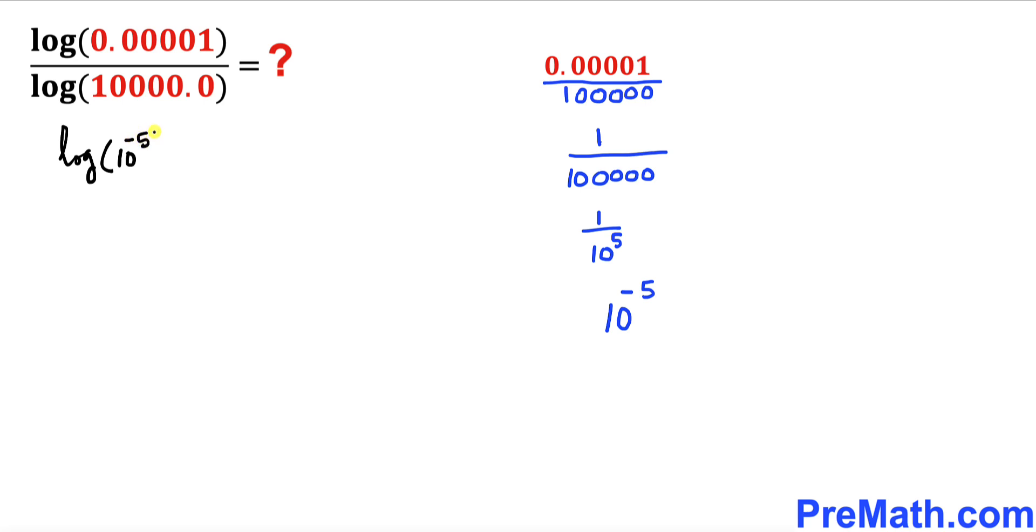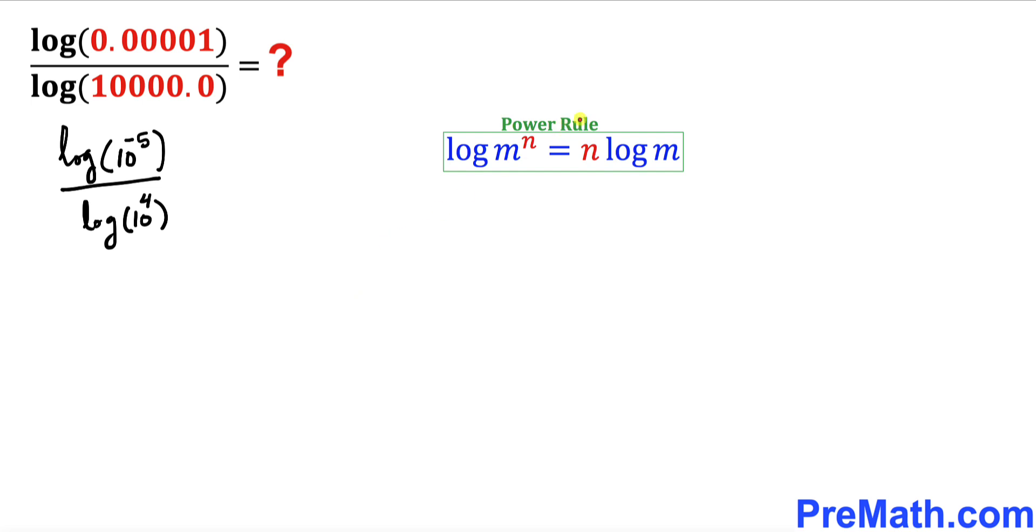Now let's recall the power rule. According to this rule, I can move this exponent all the way to the very front. Likewise, this exponent to the front as well. So therefore, our expression is going to look like negative 5 times log of 10 divided by 4 times log of 10.